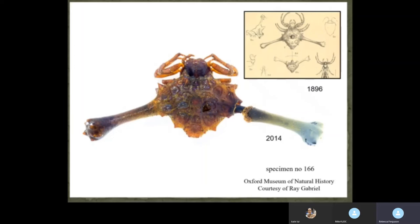And that is the type specimen of Friula wallacei — it's probably about a centimetre long, not big, but it is a strange creature. So now we have found the type specimen of Friula wallacei. The question is: does it still exist in the world, or is it in fact extinct? There was only one thing to do, and that was to go to Borneo.